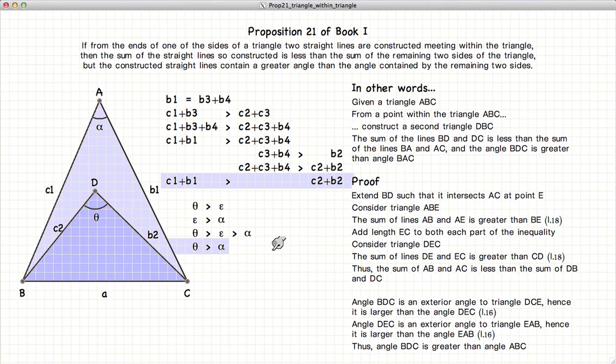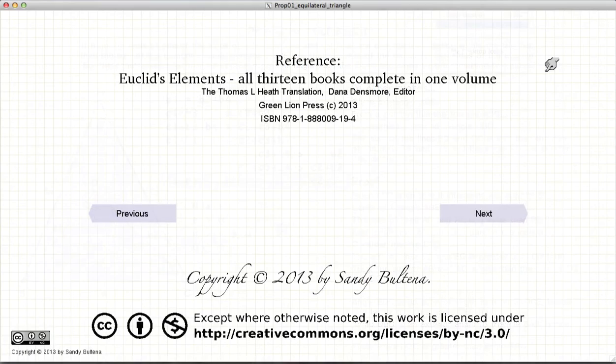And thus we have demonstrated Proposition 21, where the sum of the inner sides of the triangle is less than the sum of the outer sides of the triangle, and that the inner angle is larger than the outer angle. And that concludes this video presentation. To see the next presentation, just click the Next button.